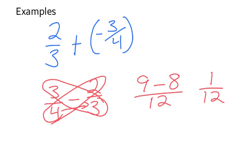And in this case my answer is going to be negative because my larger number in my original equation, or the larger absolute value, was negative. So again my solution is negative 1 twelfth.